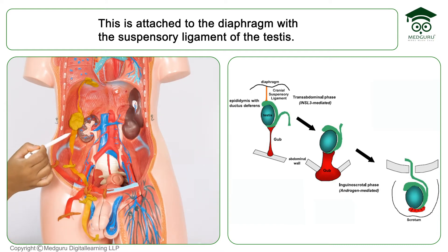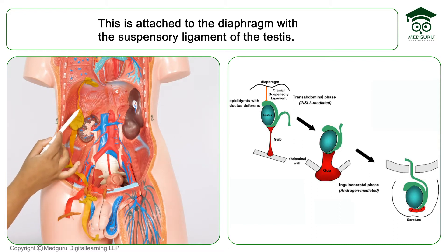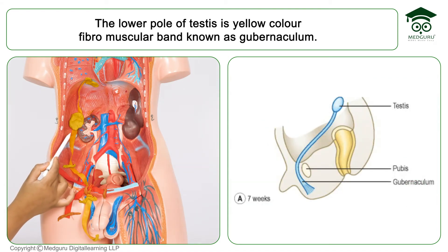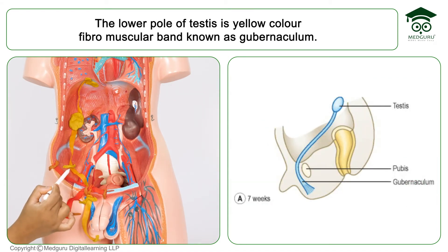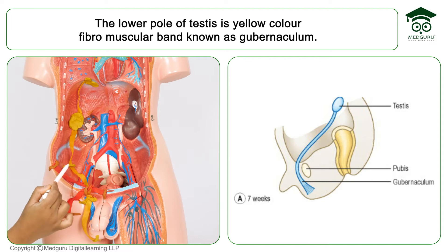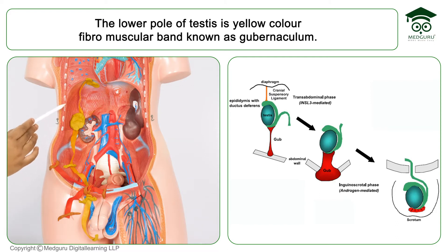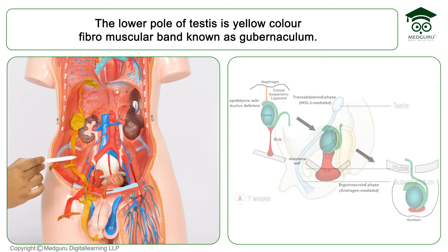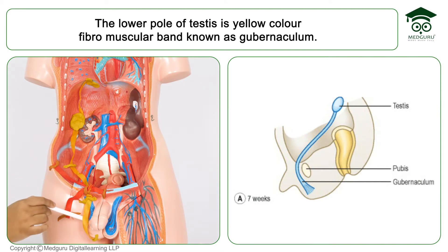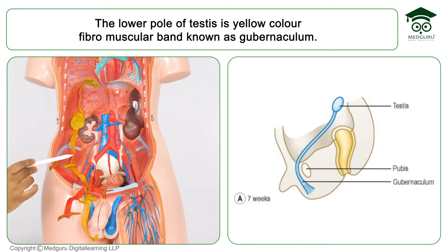So above, from the testes to the diaphragm, there is the suspensory ligament. And from the lower pole of the testes, you will find a yellow colored strip — this is nothing but a fibromuscular band known as gubernaculum. So the testes is cranially attached to the diaphragm by the suspensory ligament and caudally attached to the floor of the scrotum by a fibromuscular band known as gubernaculum.